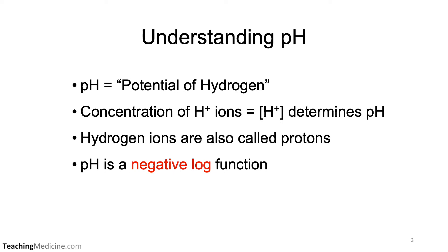pH stands for potential of hydrogen. The concentration of hydrogen ions determines the pH. A hydrogen molecule is one proton and one electron. When you lose the electron, you have a hydrogen ion, and so sometimes hydrogen ions are simply called protons.